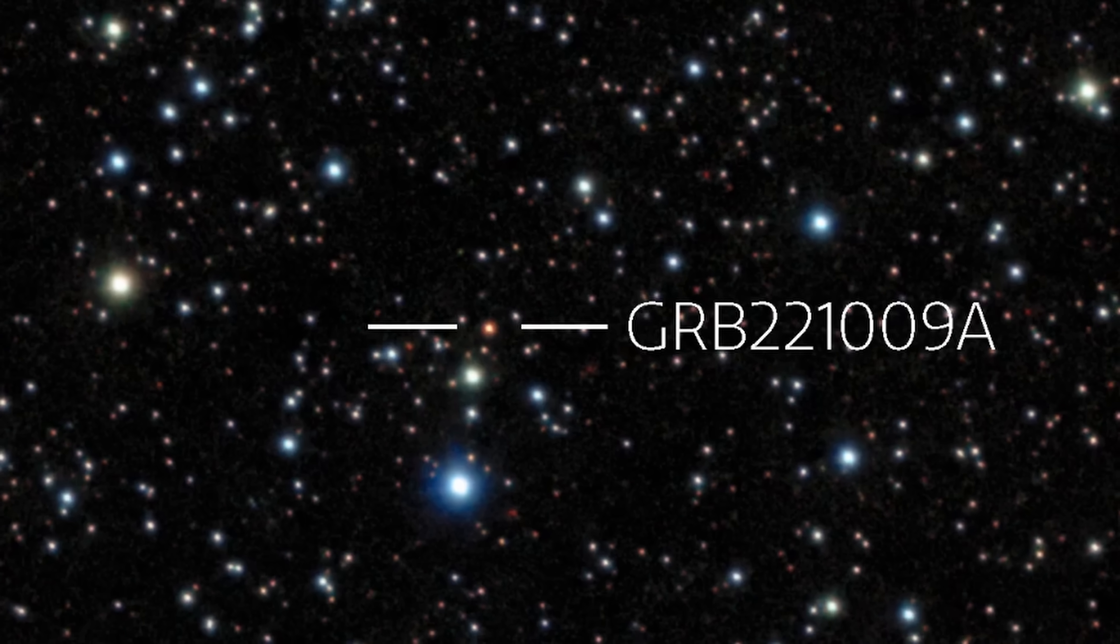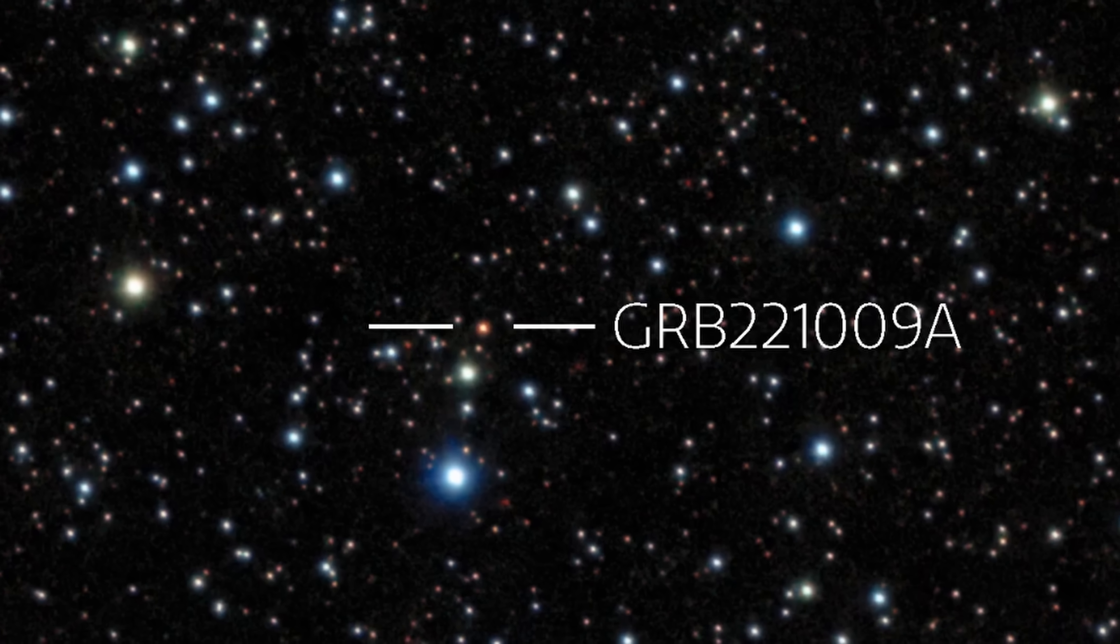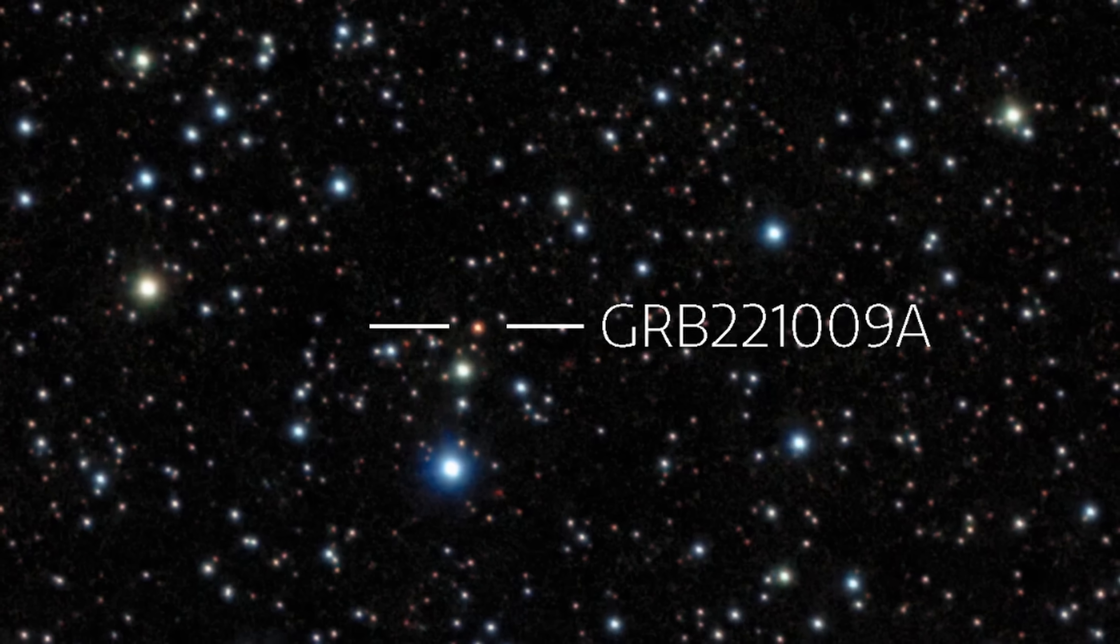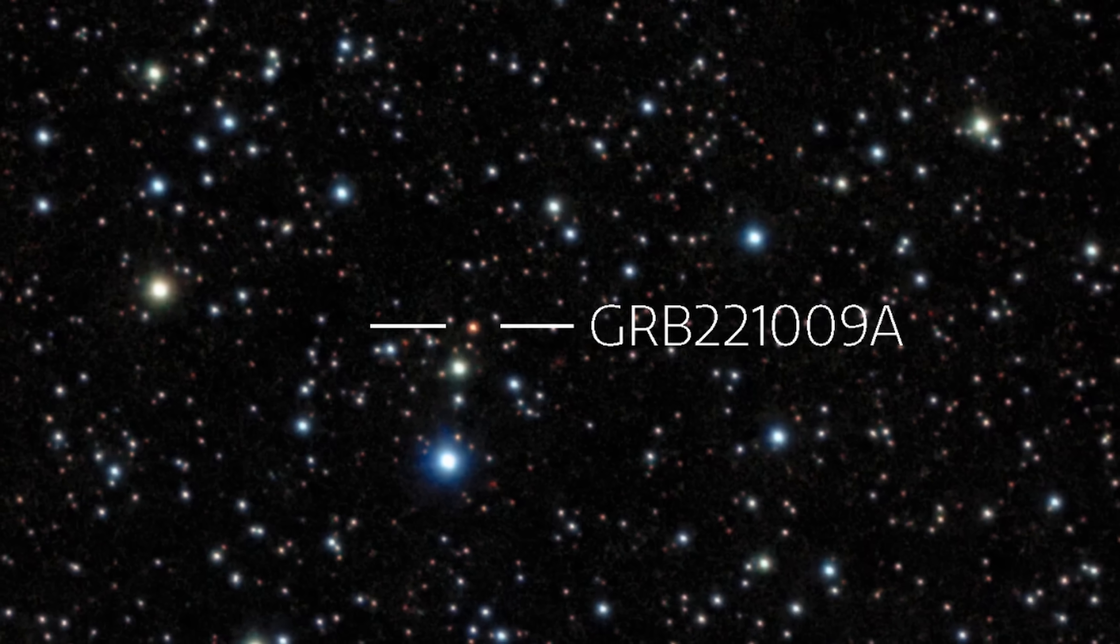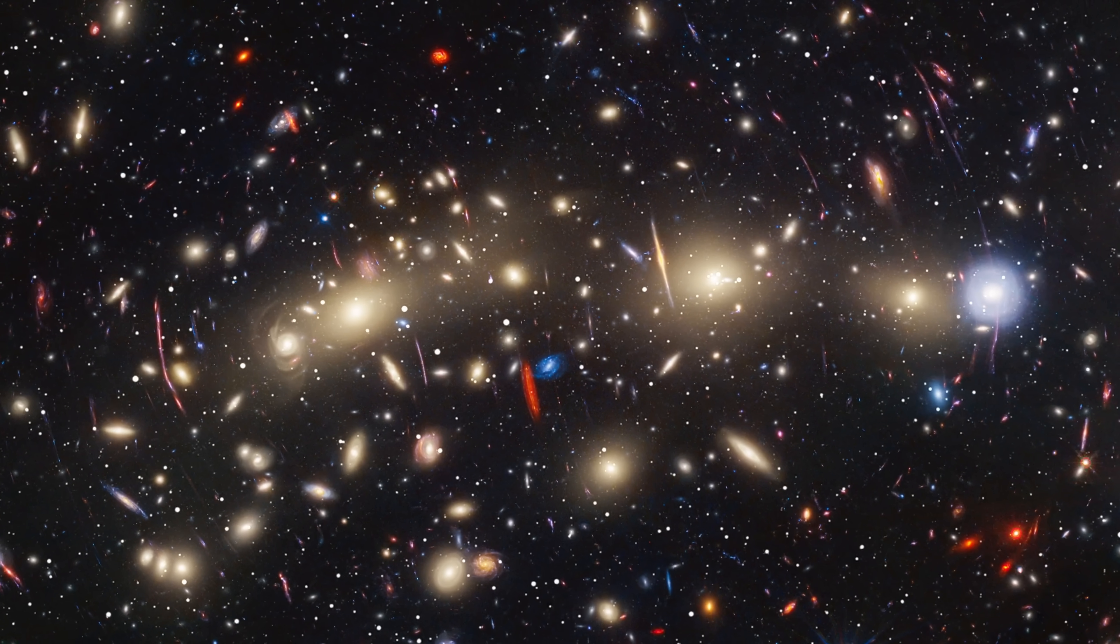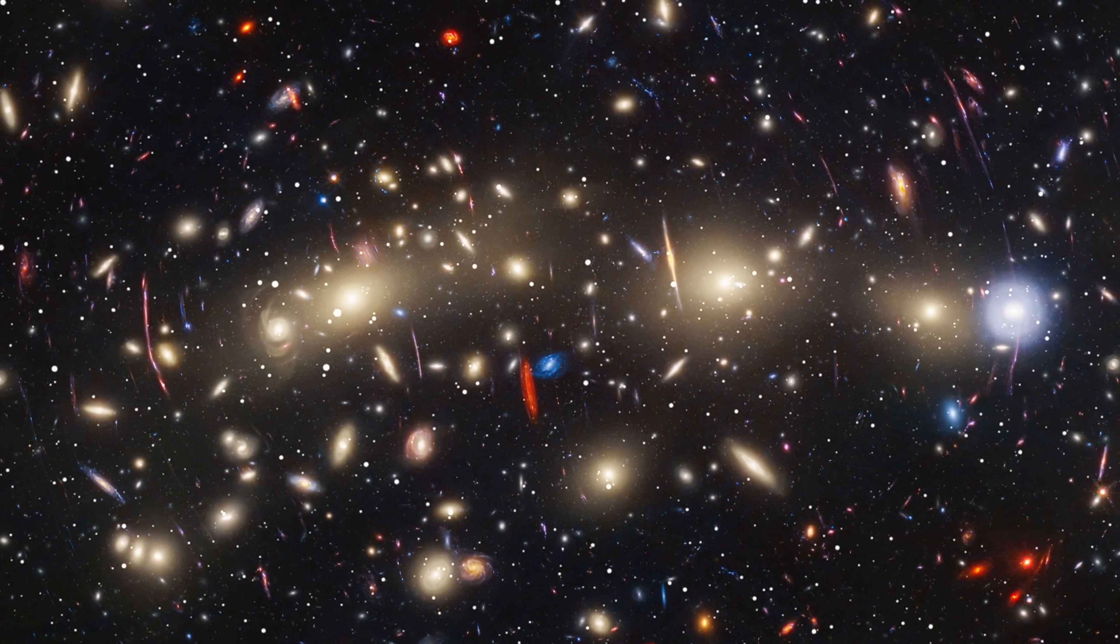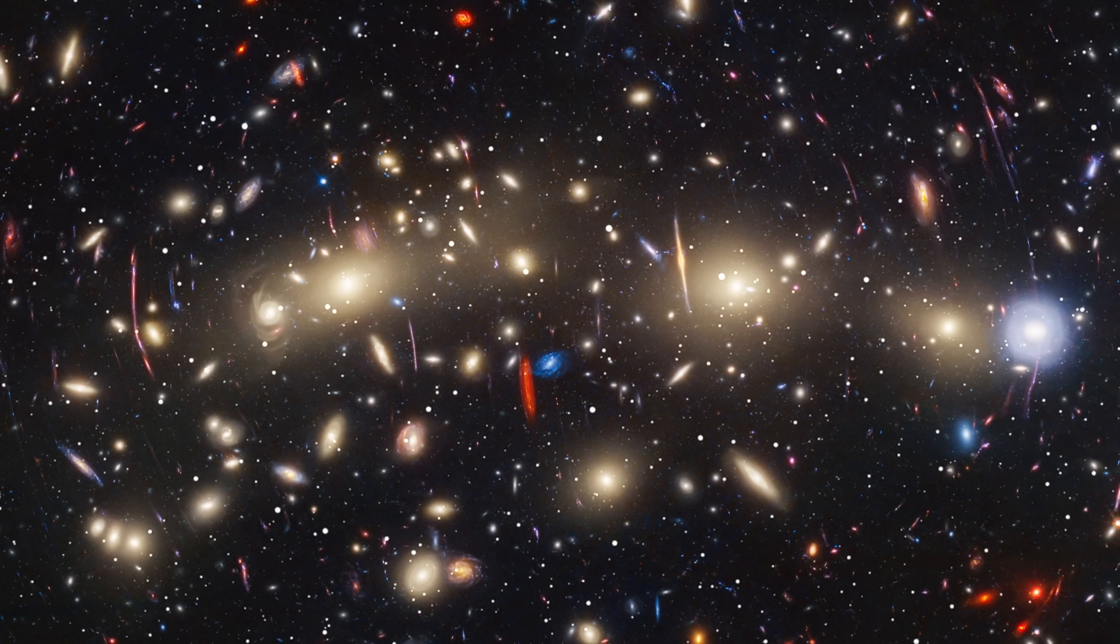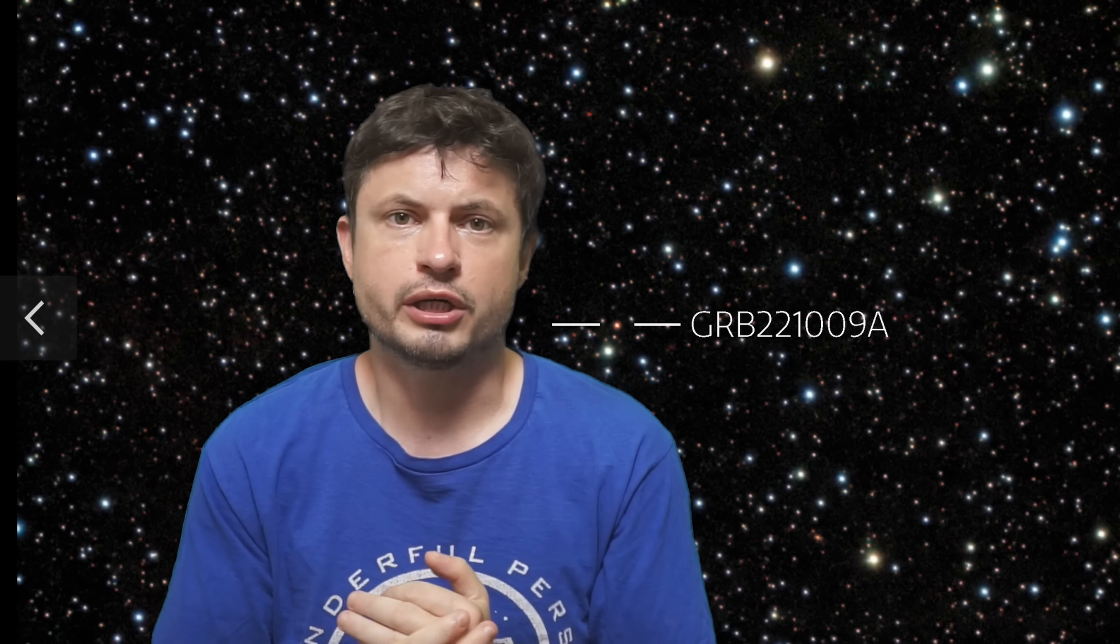And because this produced some of the most powerful gamma rays, and also because this was coming from such a faraway distance, this of course was a perfect opportunity to try to find signs of the violation of the Lorentz invariance by using these high energy gamma rays. And the way this would appear in data would be basically a slightly different time of arrival for gamma rays that have much higher energy.